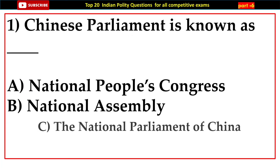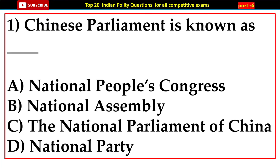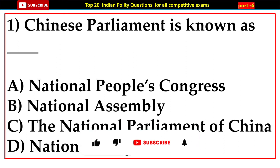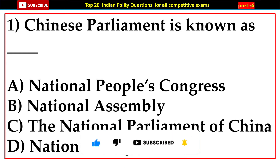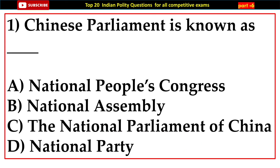Question number one: Chinese parliament is known as — options: A) National People's Congress, B) National Assembly, C) The National Parliament of China, D) National Party. Answer: A) National People's Congress.